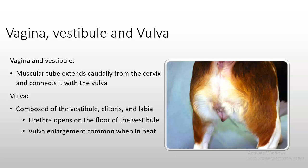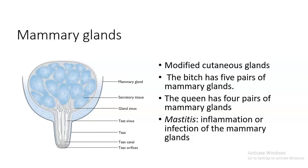Mammary glands are modified cutaneous glands. The bitch (female dog) has five pairs of mammary glands; the queen (female cat) has four pairs, to supply milk to their young. Mastitis is inflammation or infection of the mammary glands — the glands become very red, enlarged, firm, and warm to the touch, and it is extremely painful for the animal.